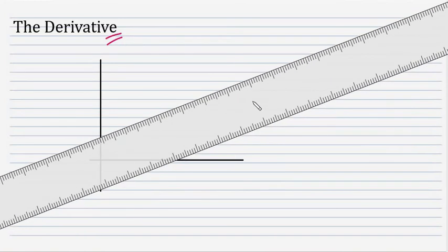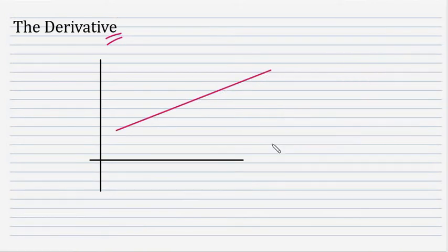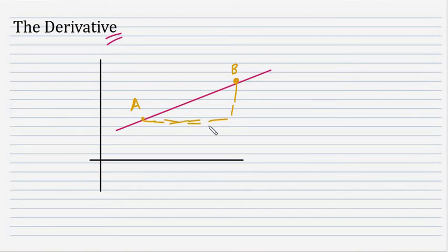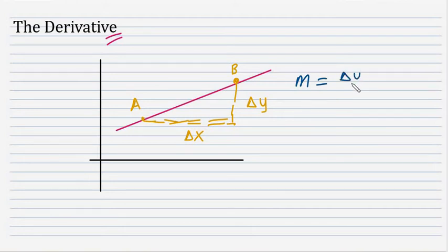In analytic geometry, we have learned that a line has a slope, and that slope is determined by simply selecting two points on that line, let's say points A and B, and getting the change in Y divided by the change in X. Therefore, the slope is equal to delta Y over delta X, popularly known as rise over run.